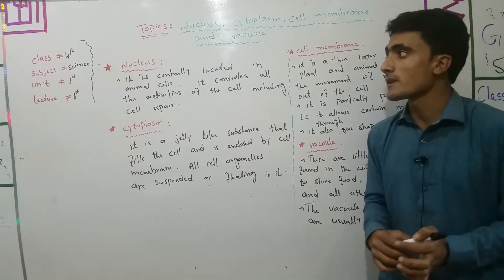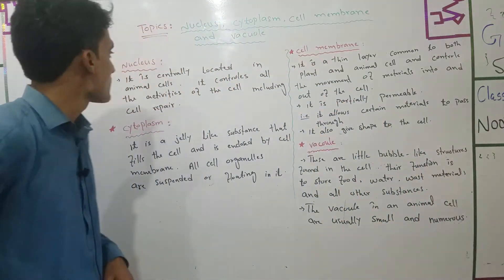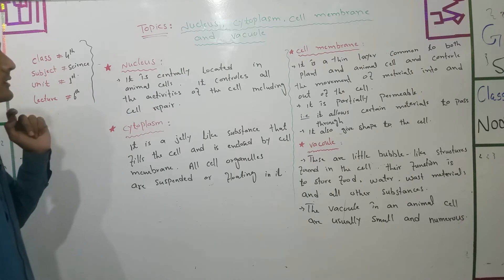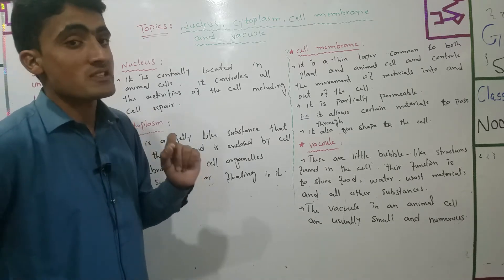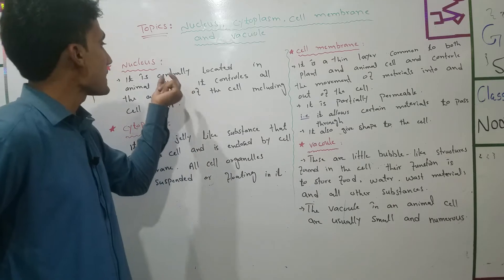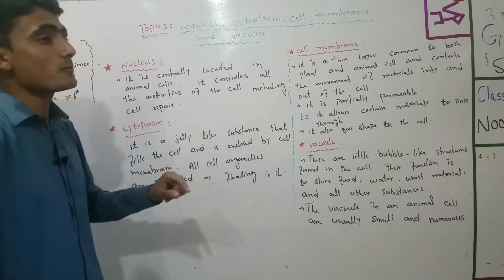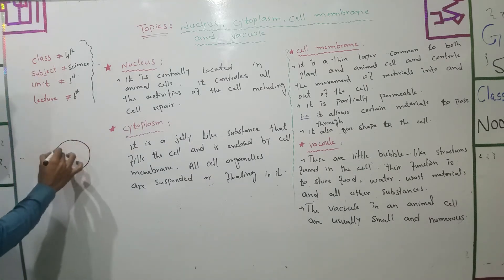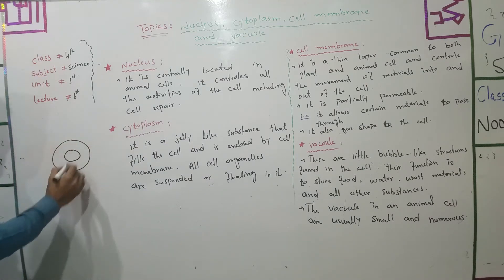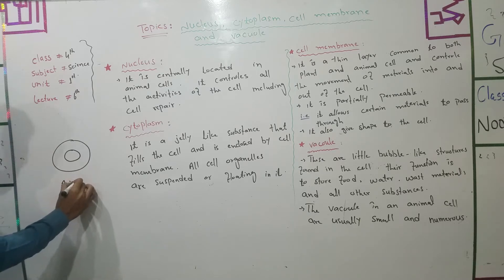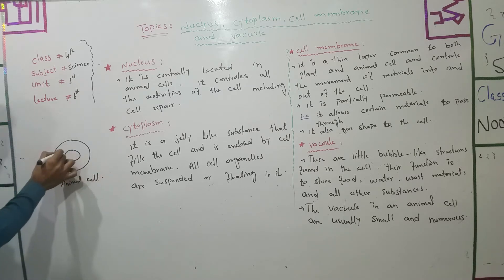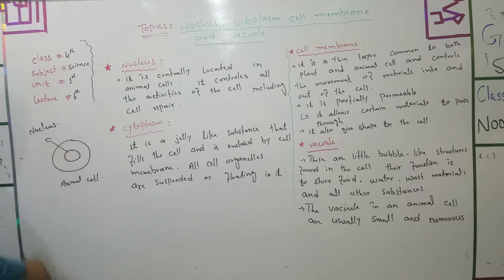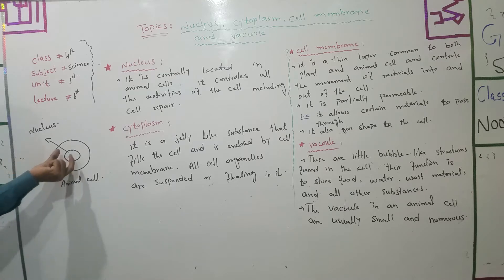The first organelle is the Nucleus. The nucleus is centrally located in the animal cell. Centrally located means it is present in the center — 'dharmyan mein' means in the middle, 'mojood hona' means to be present. So the nucleus is present at the center of the animal cell.